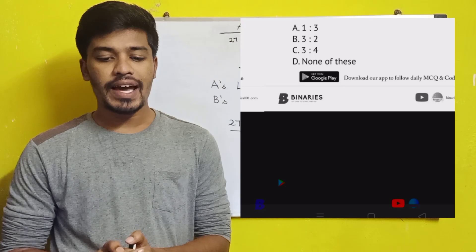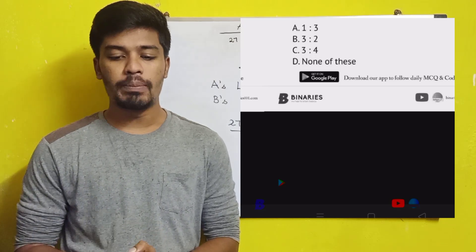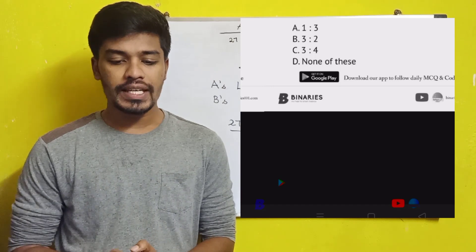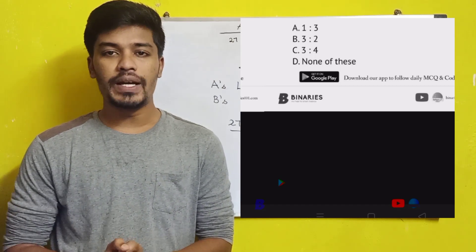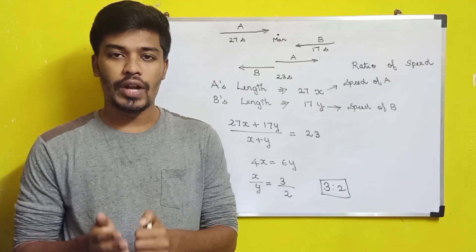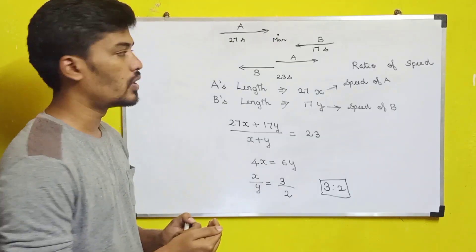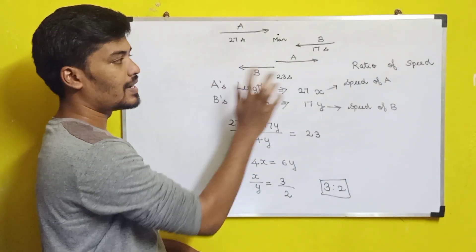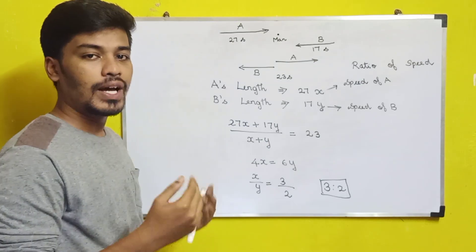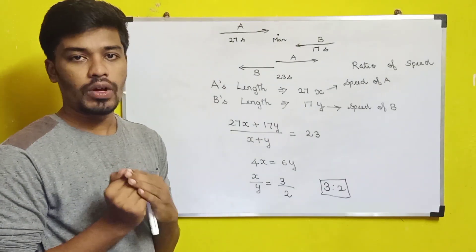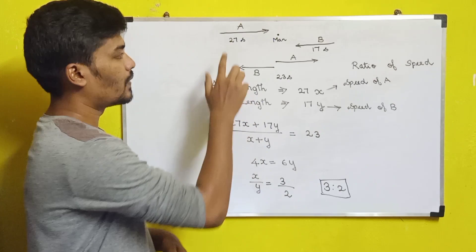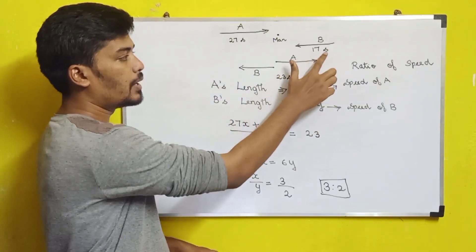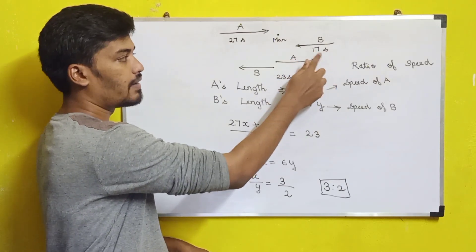The second question: two trains running in opposite directions cross a man standing on the platform in 27 seconds and 17 seconds respectively, and they cross each other in 23 seconds. The ratio of their speeds is? Consider Train A and Train B moving in opposite directions. Train A crosses the man in 27 seconds; Train B crosses the man in 17 seconds.